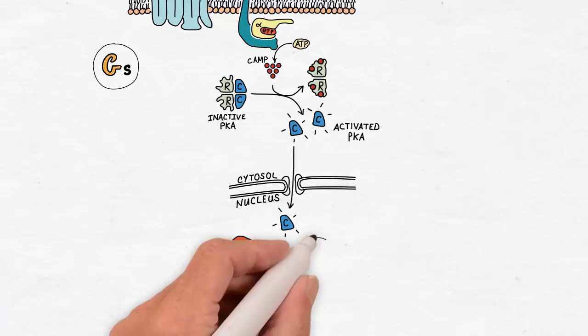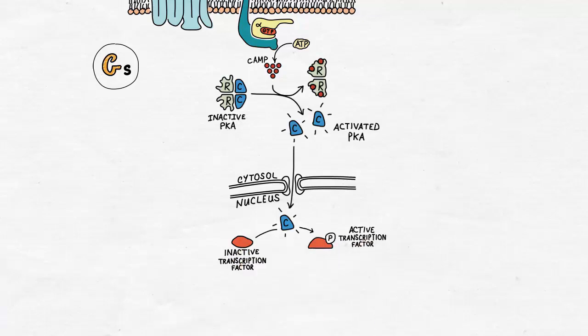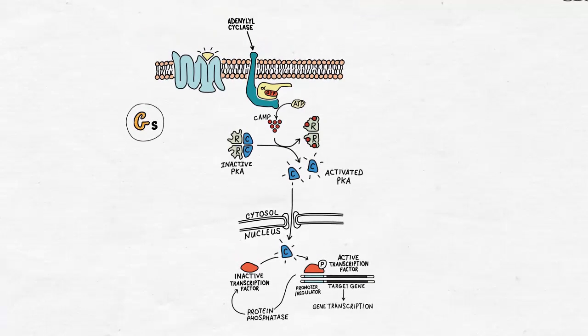Phosphorylating this transcription factor makes it active and ready to bind to a certain promoter or regulatory sequence controlling transcription of the target gene. On the other hand, as a part of the counteracting mechanisms, protein phosphatases dephosphorylate activated proteins making them inactive and hence controlling the signaling pathway.